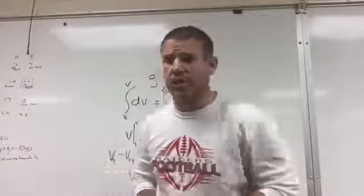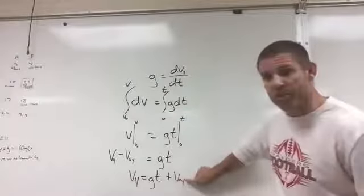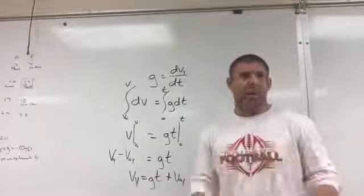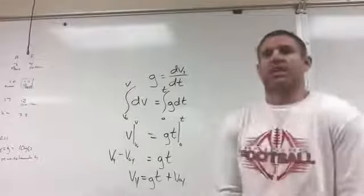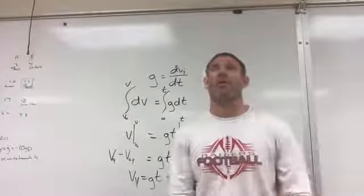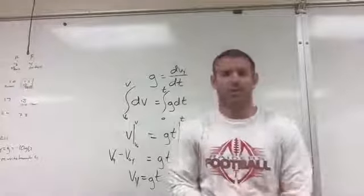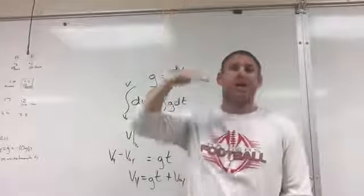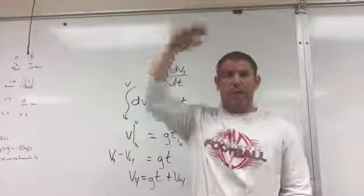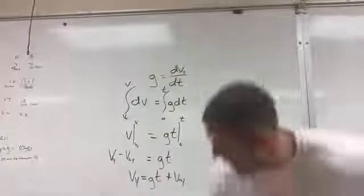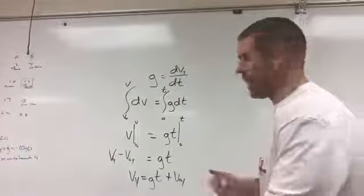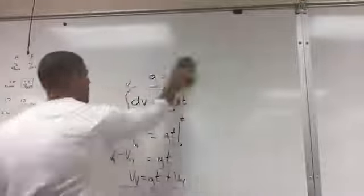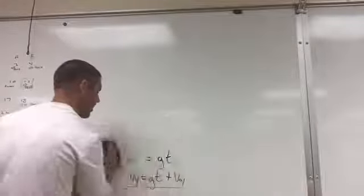As long as we know the initial condition, we know exactly where that velocity starts. If we're throwing it up, the velocity is positive going up, it slows down as it rises, then speeds back up as it comes back down. Now let's derive the other kinematic equation — the third one.